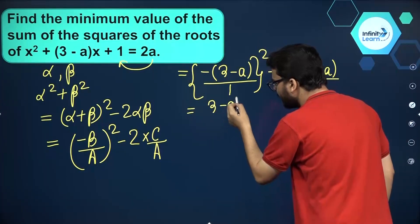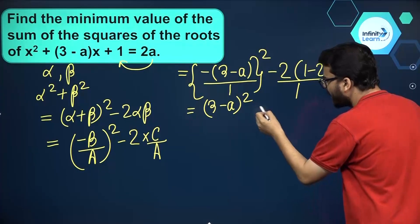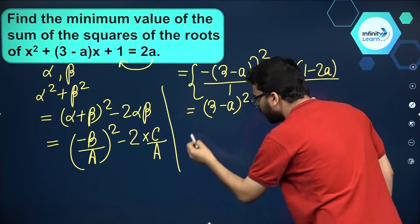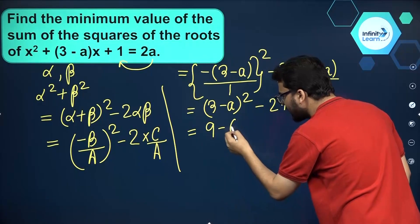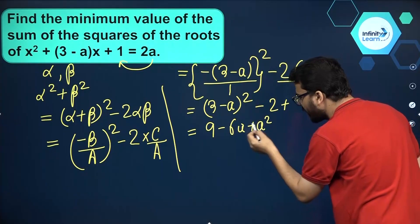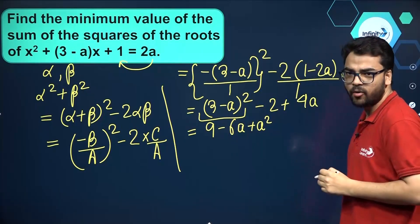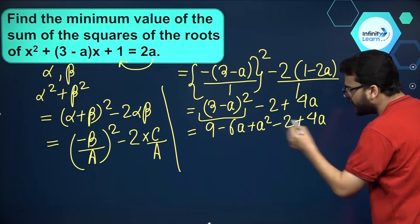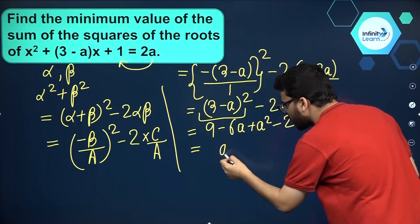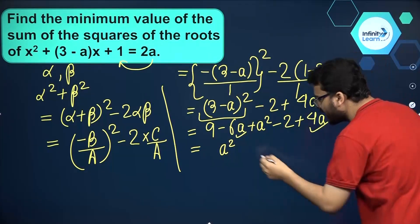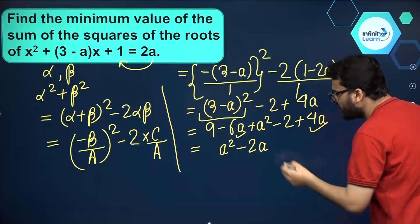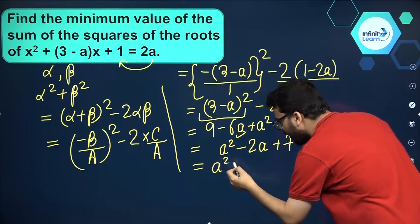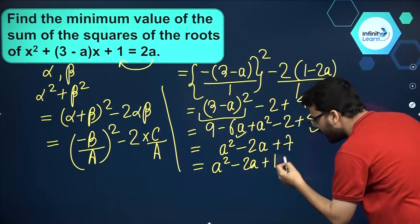Simplifying, (3 minus a) the whole square gives us 9 minus 6a plus a square, using the algebraic identity. Then we add minus 2 plus 4a. Combining terms, we get a square minus 6a plus 4a, which gives us minus 2a, and then plus 7 overall. Further simplifying, this becomes a square minus 2a plus 1 plus 6.